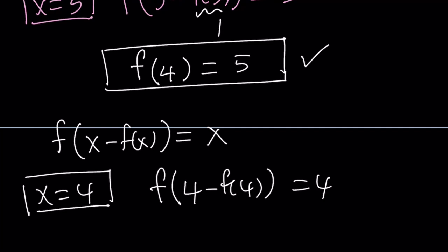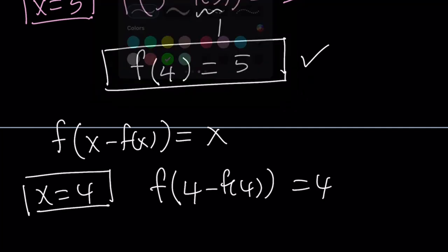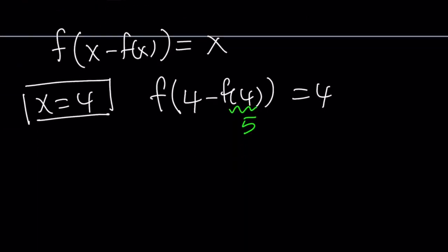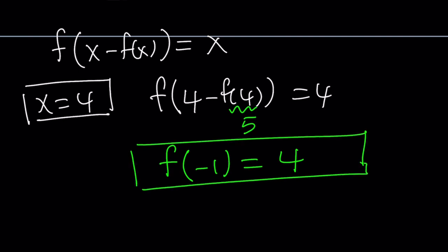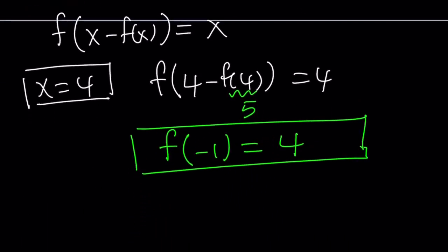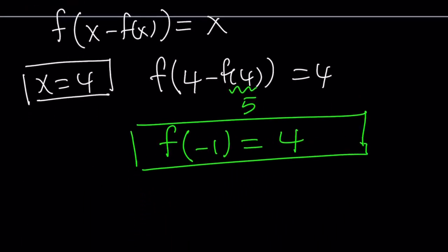Now we do know that f of 4 is equal to 5. So we can replace f of 4 with 5. That gives us f of 4 minus 5, which is f of negative 1 equals 4. And that's actually what we're looking for, right? The question was finding f of negative 1 and we did and the answer is 4.